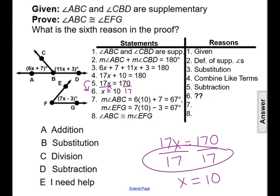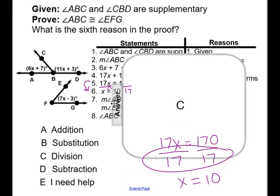We used division. We divided both sides by 17. So that will be our sixth reason, division, making our answer choice C.